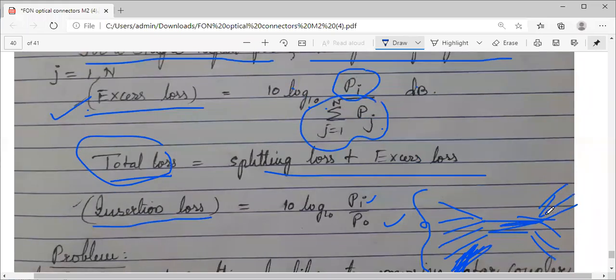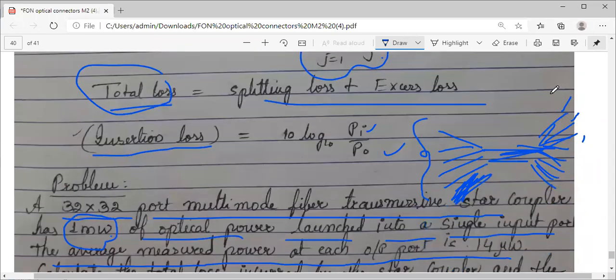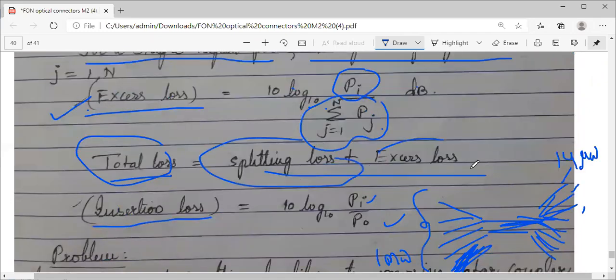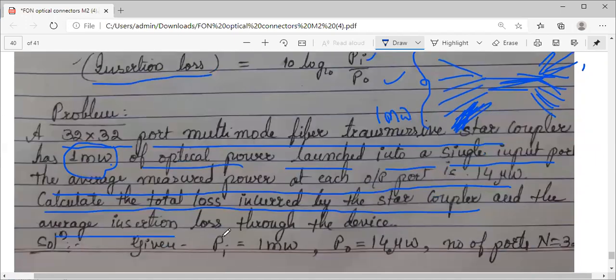There are 32 different output ports, each has 14 microwatts. Your one milliwatt input power is divided among these 32 fiber ends. Calculate the total loss incurred by the star coupler. Total loss is sum of splitting loss and excess loss, and the average insertion loss.